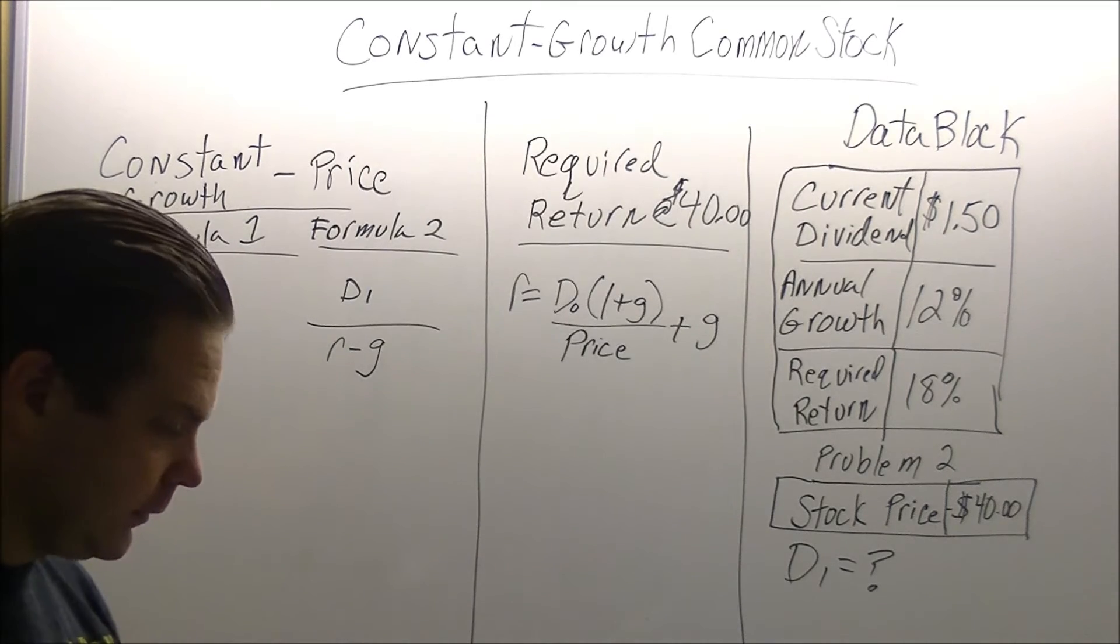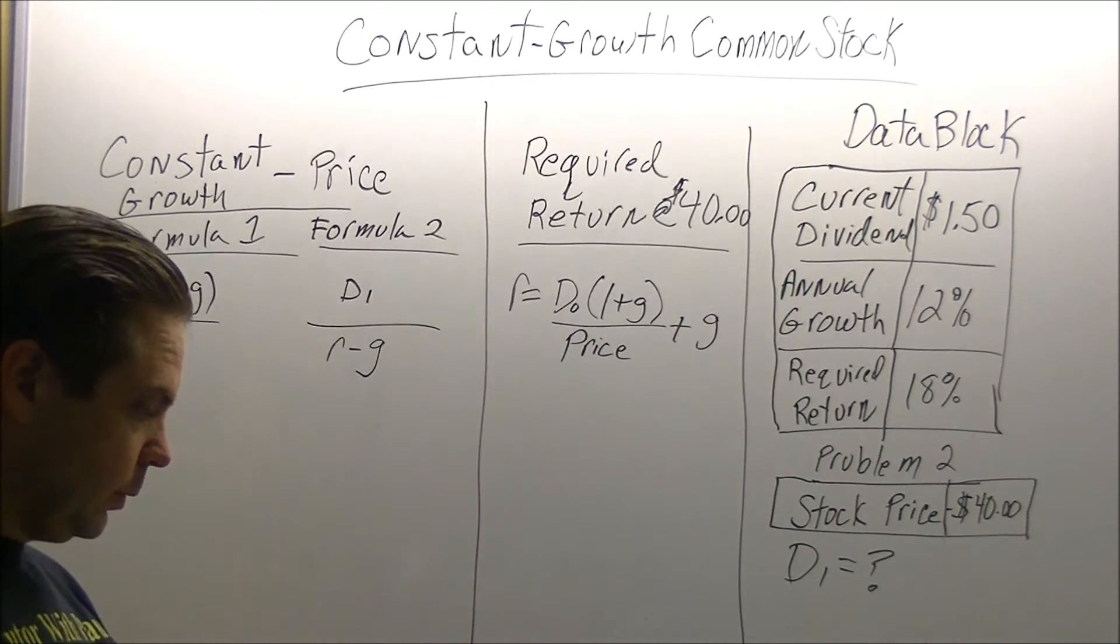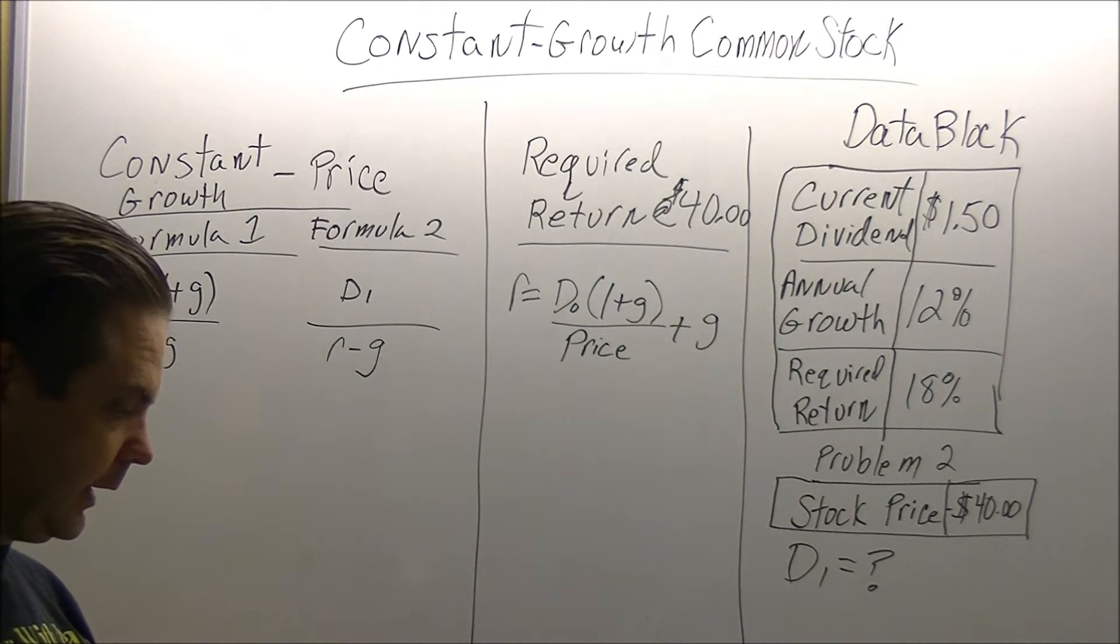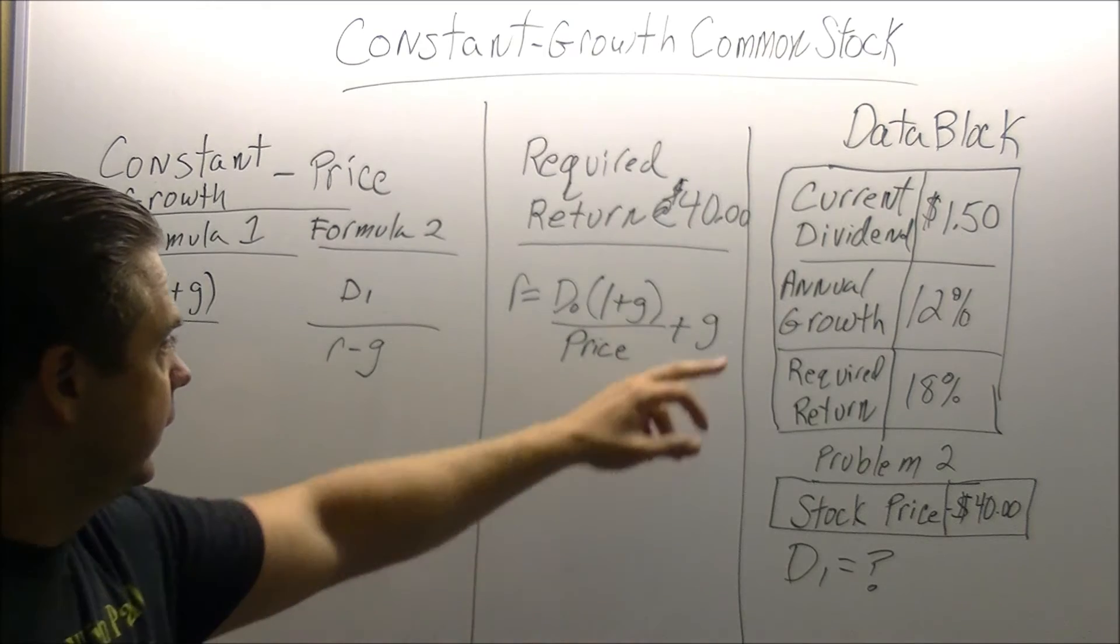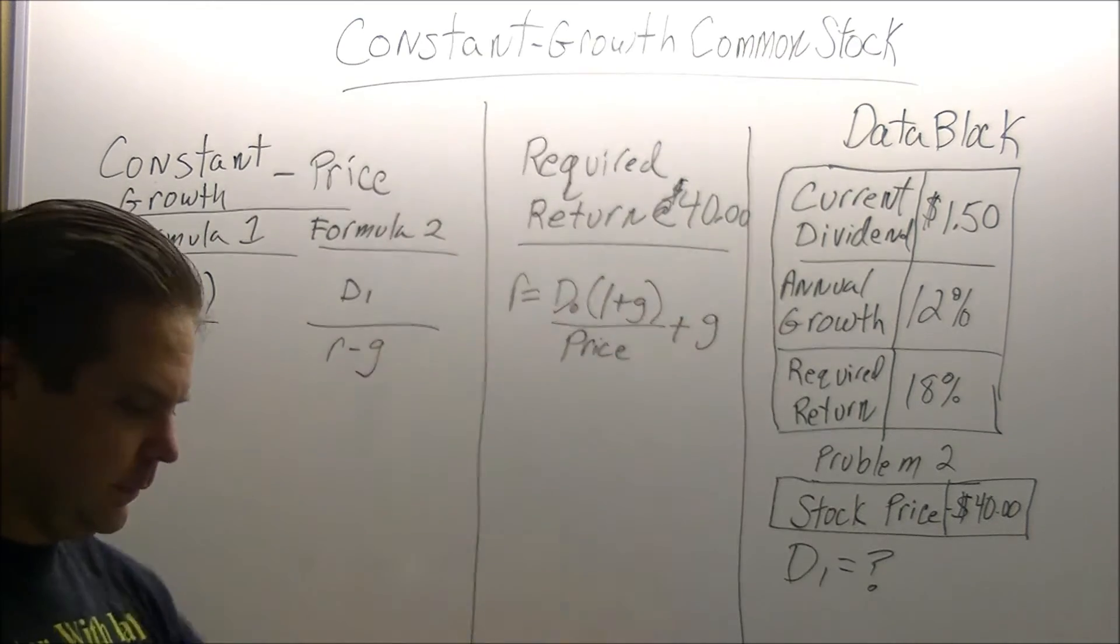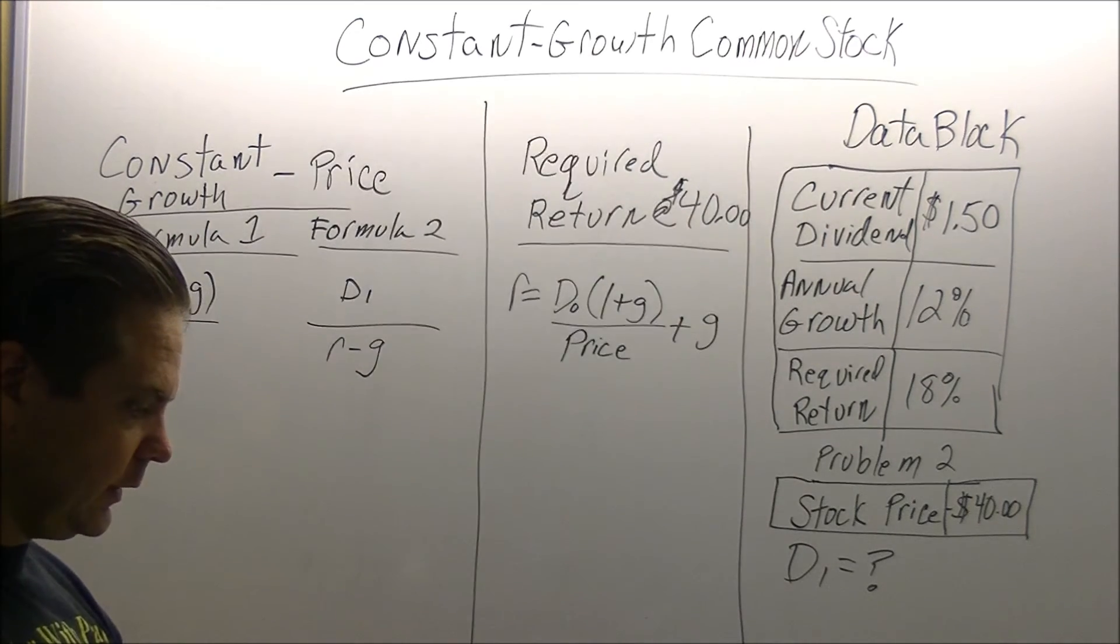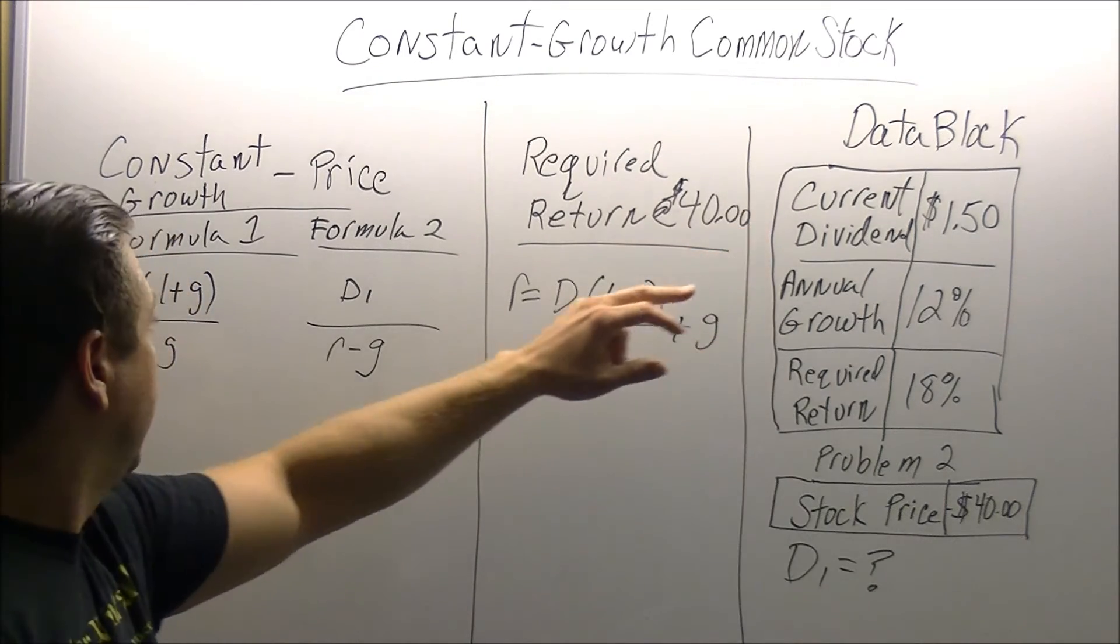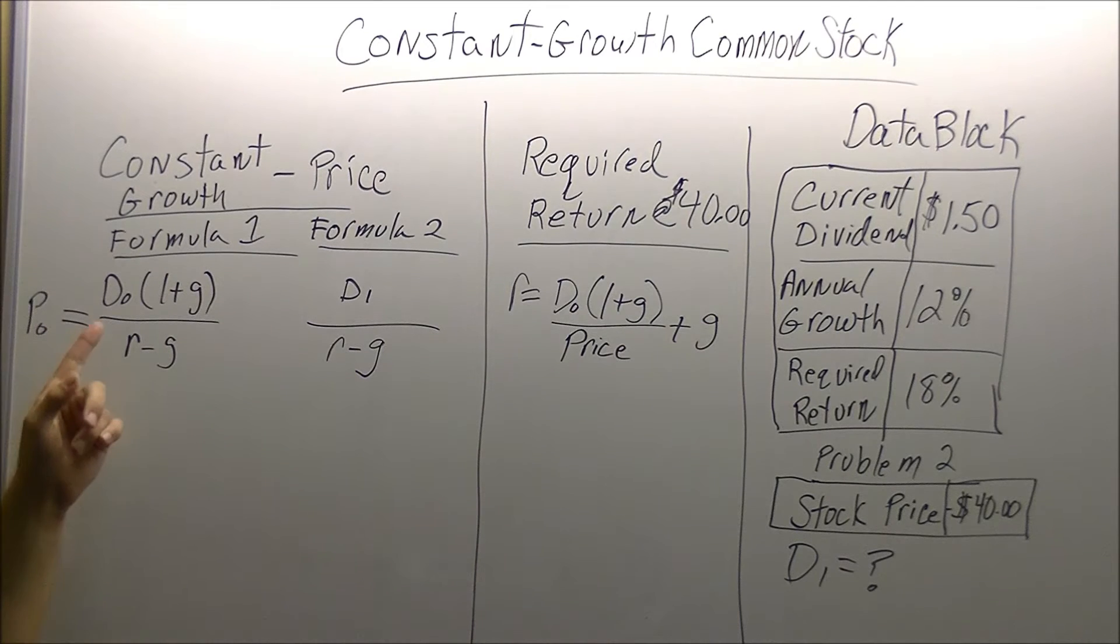The problem we are going to be working through today is: what is the value of a common stock if the firm's earnings and dividends are growing annually at the rate of 12%, the current dividend is $1.50, and the current dividend is also going to be D0.